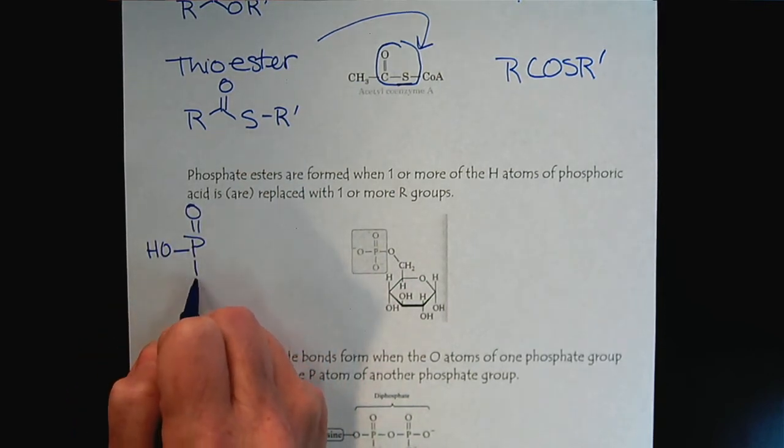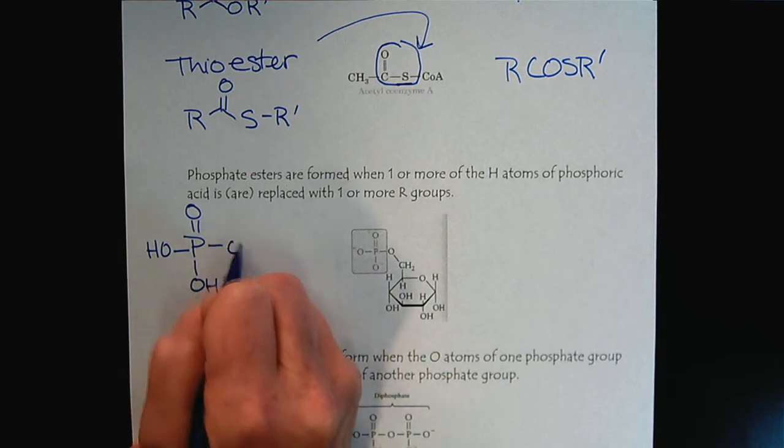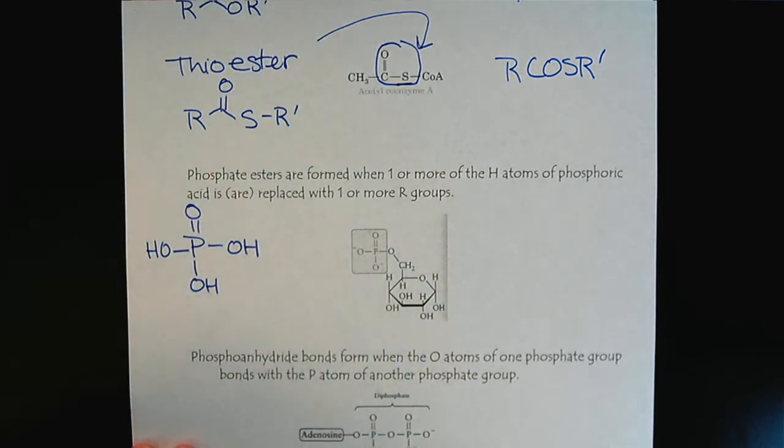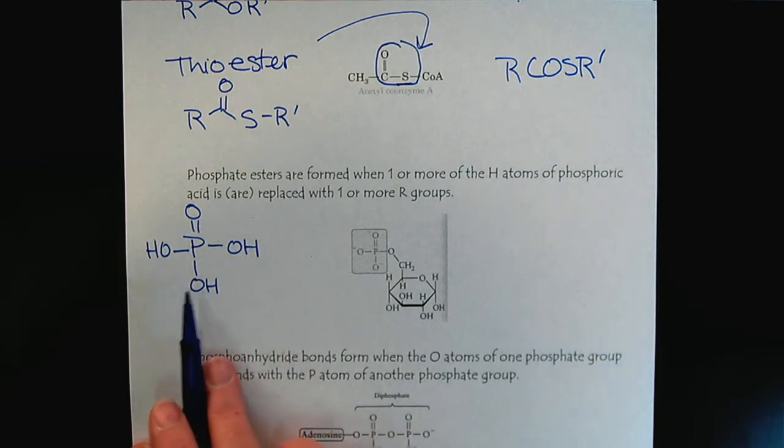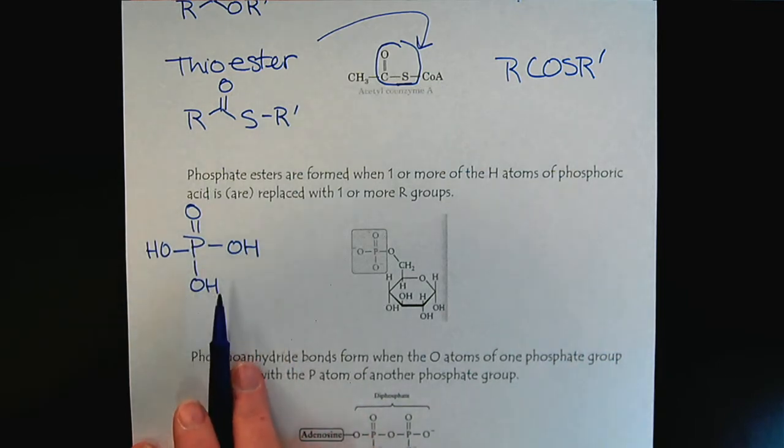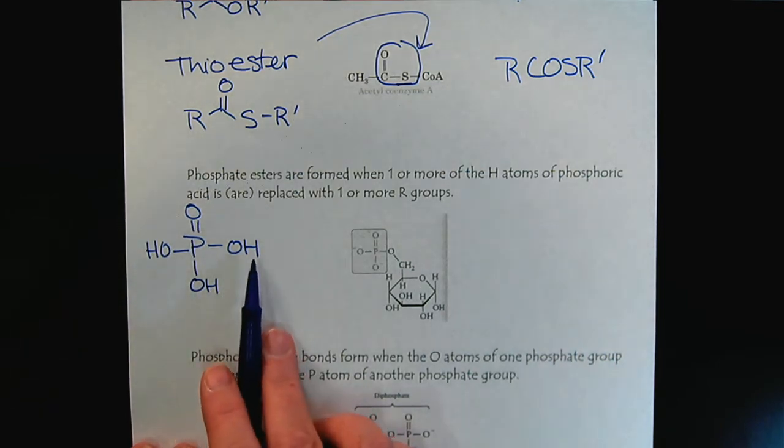So let's start by looking at phosphoric acid. So here we have the structure of phosphoric acid. So what makes phosphate groups so important to our biochemistry is basically there's three arms coming off. Each of these arms, the hydrogen, can be replaced with R groups.